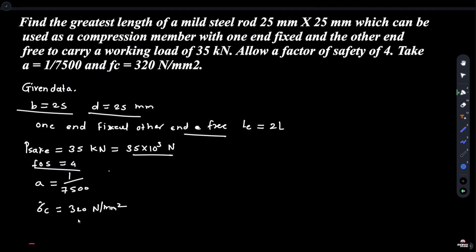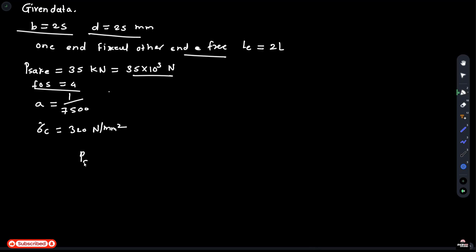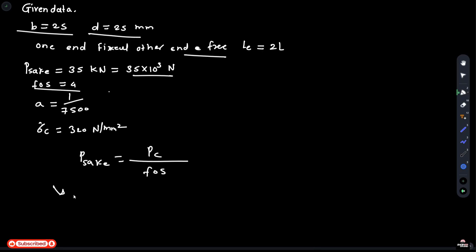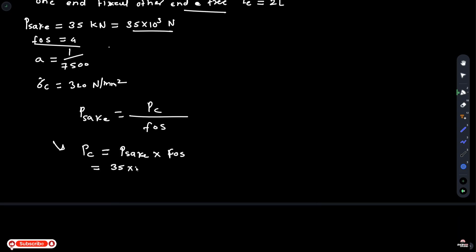Given: Rankine's constant a = 1/7500 and crushing stress σ_c = 320 N/mm². To find the greatest length, first calculate the crippling load. Rearranging P_safe = P_c / FOS, we get P_c = P_safe × FOS = 35 × 10³ × 4 = 140 × 10³ N.